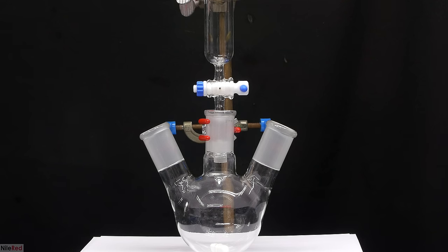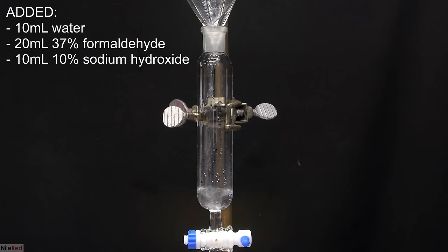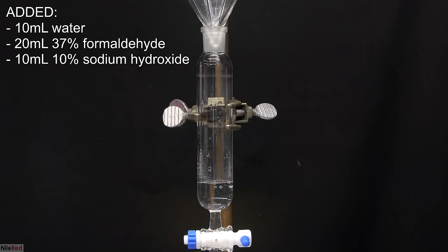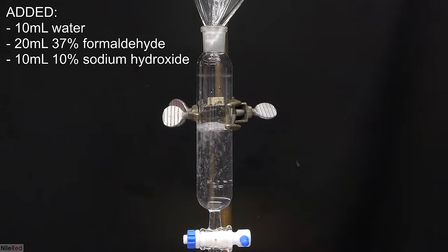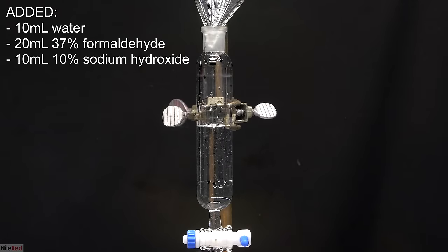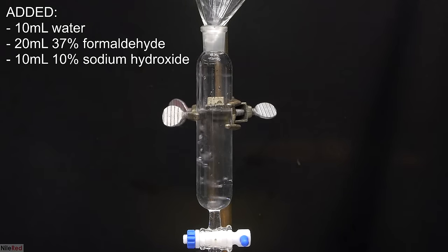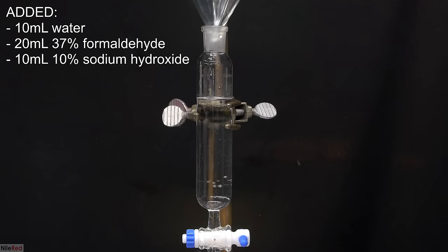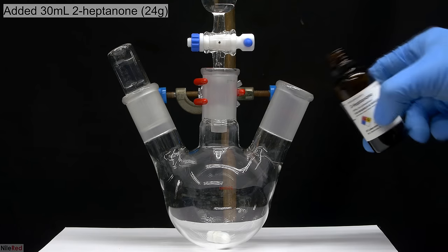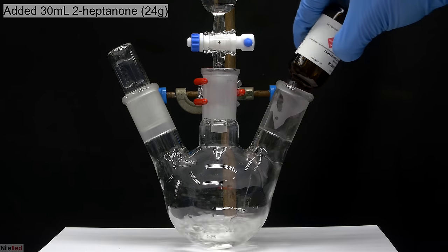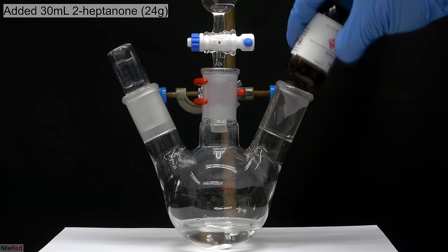For the aldol reaction and condensation, we'll need a 3-necked round-bottom flask and an addition funnel. To the addition funnel, we added 10 milliliters of 10% sodium hydroxide solution, 20 milliliters of 37% formaldehyde, and 10 milliliters of water. I added the sodium hydroxide first, followed by the formaldehyde, then the water, but the order really doesn't matter. To the round-bottom flask, I then poured in 30 milliliters of 2-heptanone, which was the entire bottle.